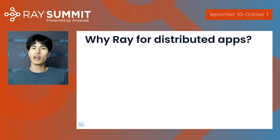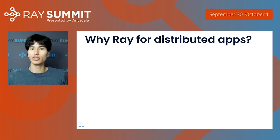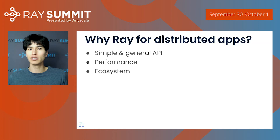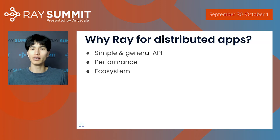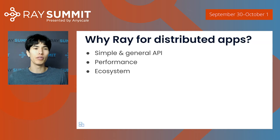I'd like to talk about what makes Ray a great choice for building distributed applications, and why all of these libraries are choosing Ray. I think it comes down to three things: the API, performance, and the ecosystem. We already talked about the ecosystem and how anyone using Ray can immediately access a whole slew of state-of-the-art libraries off the shelf, so I'll say a bit more about Ray's API and performance.